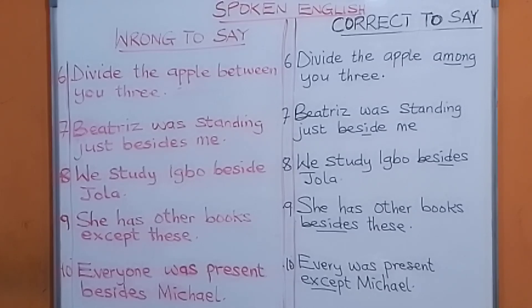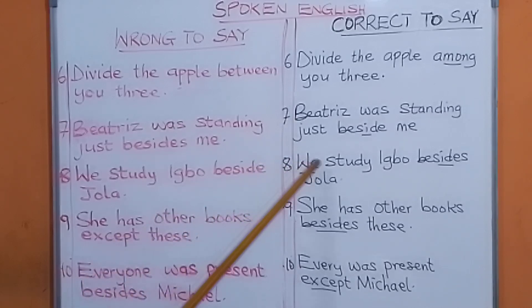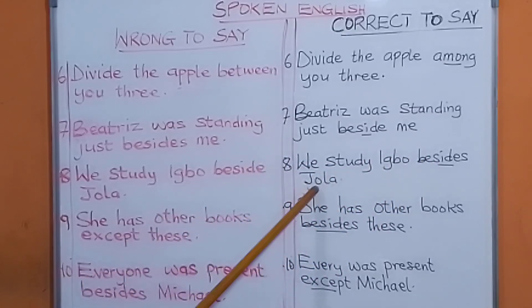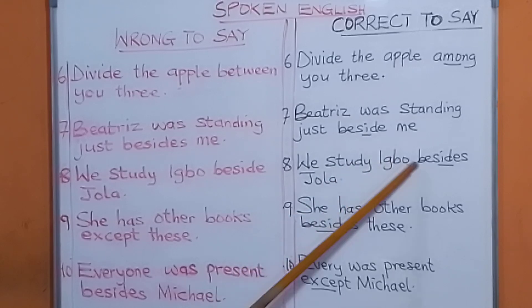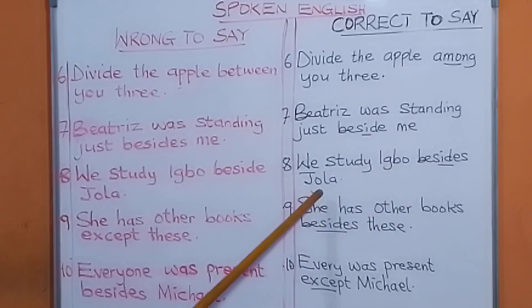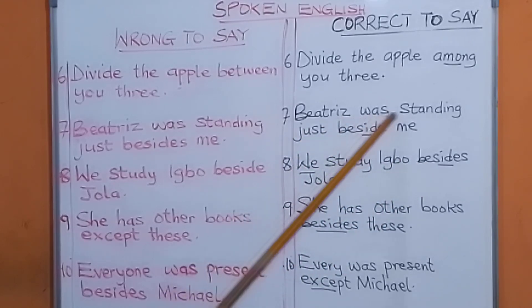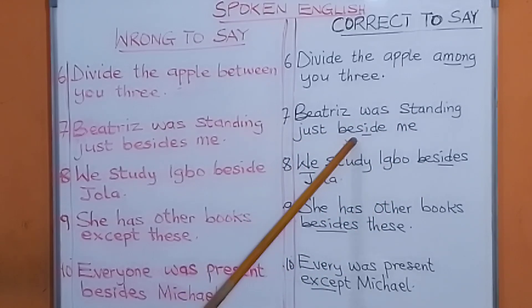'Besides' means 'in addition to.' So when you say 'we study evil besides Jola,' that means we study evil in addition to Jola. But when you say 'Beatrice was standing beside me,' that means by the side of me.